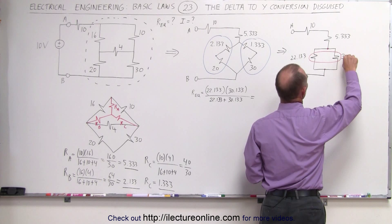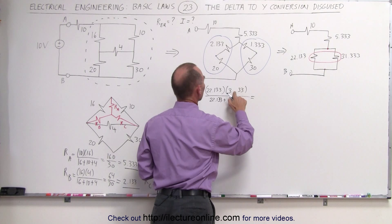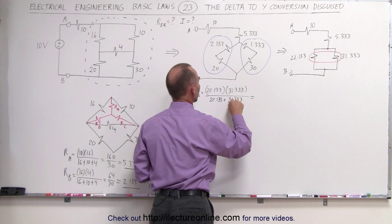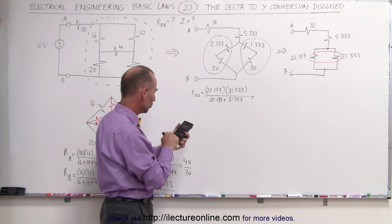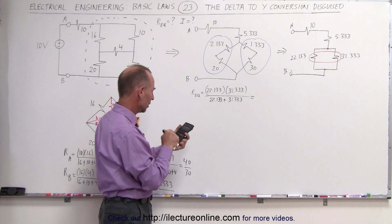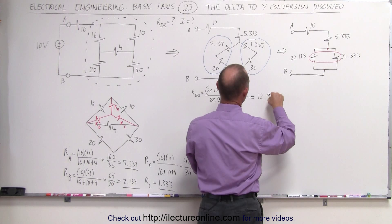Now, that means 31.333. Now, let's go ahead and work it out. 22.133 times 31.333 equals divided by the sum of 22.133 plus 31.333 equals, and we end up with an equivalent resistance of 12.97 ohms. That will replace that one.